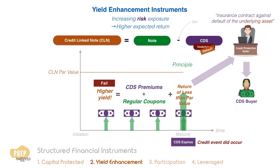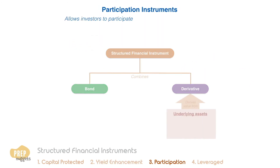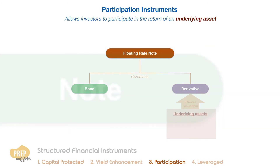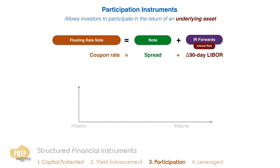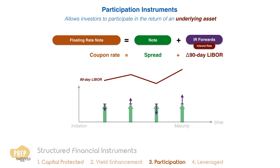A participation instrument is one that allows investors to participate in the return of an underlying asset. A floating rate note can be viewed as a type of participation instrument. Its payoff can be viewed as a regular fixed coupon note combined with interest rate forwards. The coupon rate of a floating rate note is usually calculated based on a spread plus the reference rate, which is usually the LIBOR rate. The regular fixed coupons from the note provide the spread to the FRN, while the returns from the LIBOR rate are captured by the interest rate forwards, thereby making adjustments to the regular coupons. This gives us floating rate coupons that participate in the movement of interest rates. A floating rate note has very little interest rate risk, because changes in the cash flows limit the effect of changes in interest rates on its price.